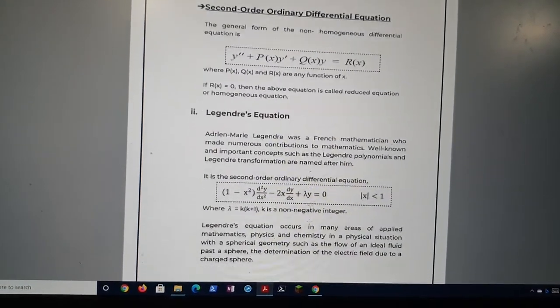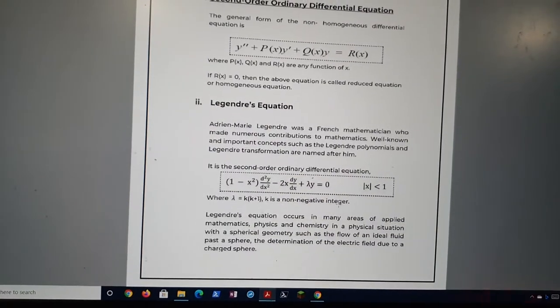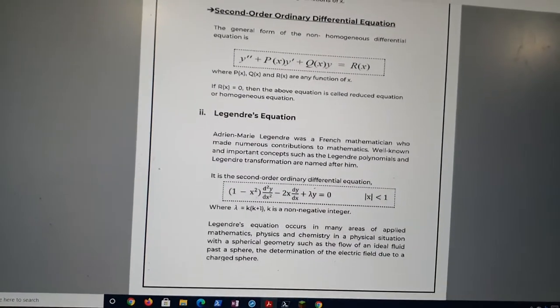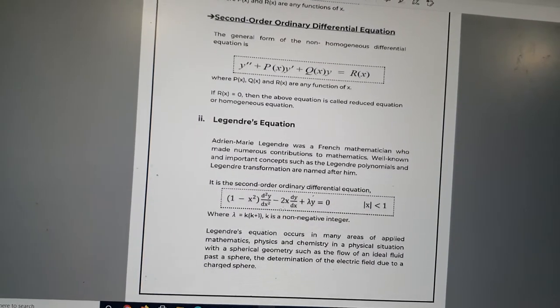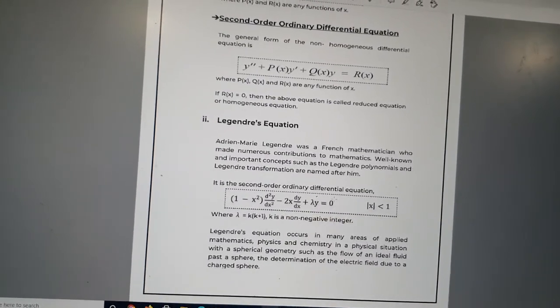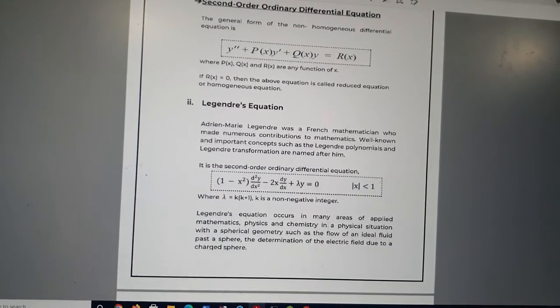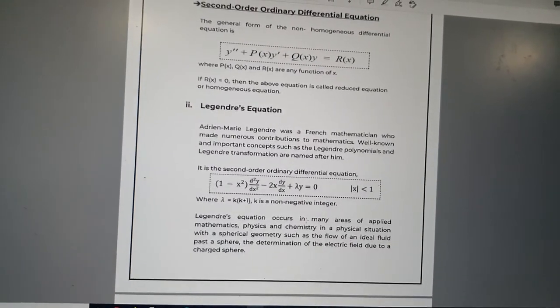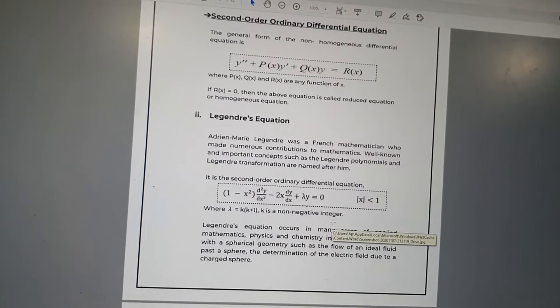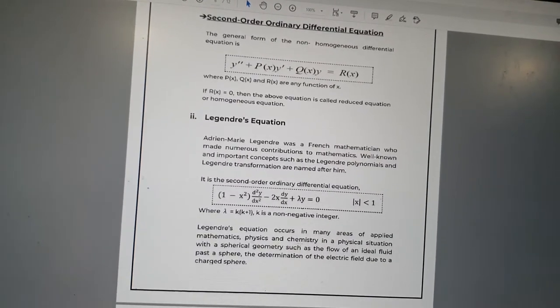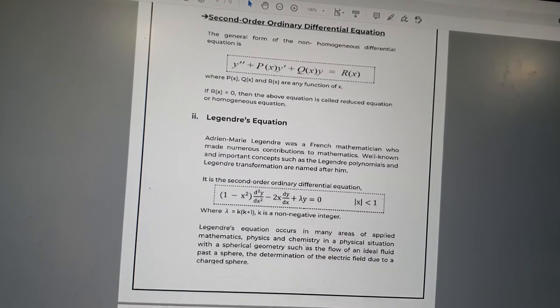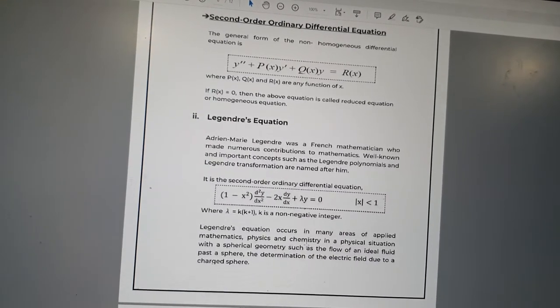Legendre's equation is basically a special case of second order differential equations in which the equation is exactly (1 - x²)y'' - 2xy' + λy = 0, where |x| < 1. Here lambda is k(k+1) where k is a non-negative integer. This is just a special case of second order differential equations as we see it in many areas of applied mathematics, physics and chemistry.